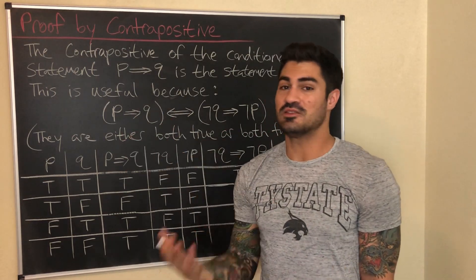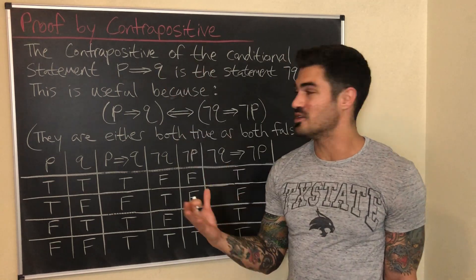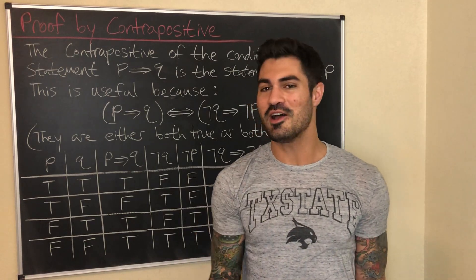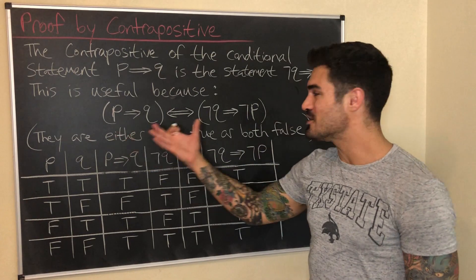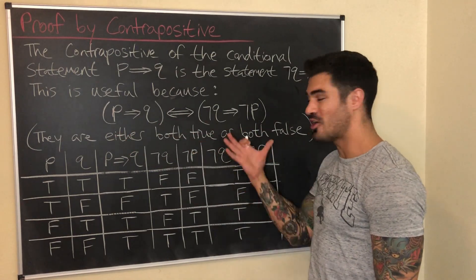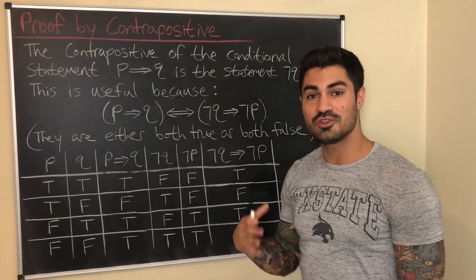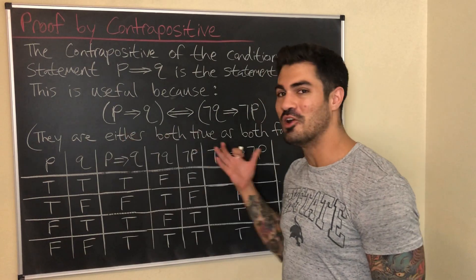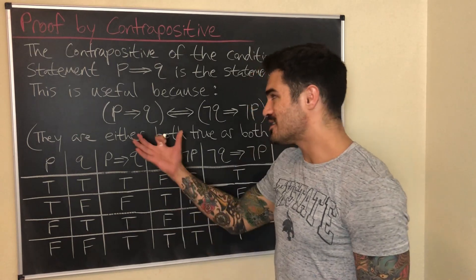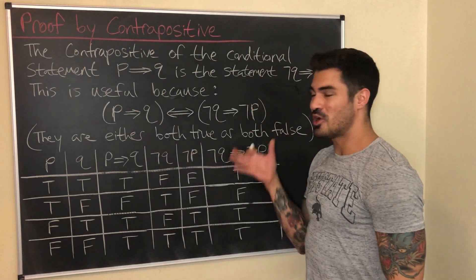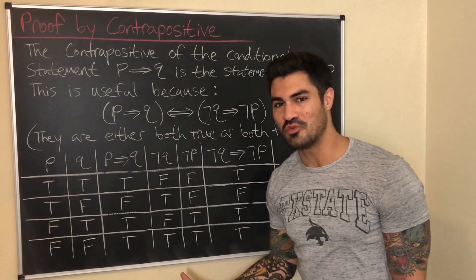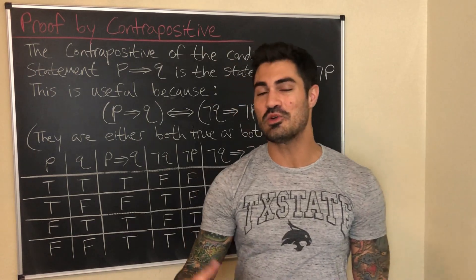If I have a conditional statement and I know that its contrapositive is true, then I can conclude the original statement is true as well. That's the basic idea of proof by contrapositive. We take a conditional statement we're trying to prove — maybe direct proof isn't working — and we look at the contrapositive and try to prove that directly. A lot of times it is much easier to prove the contrapositive than to prove the statement directly.